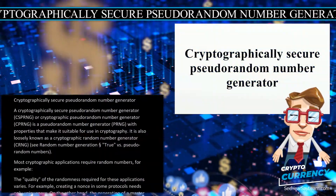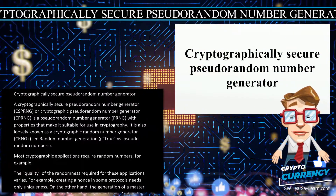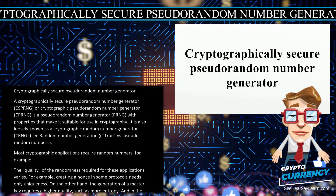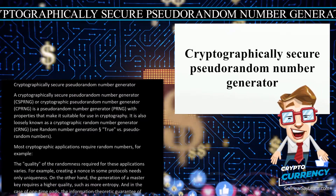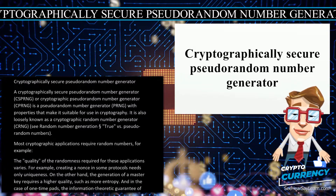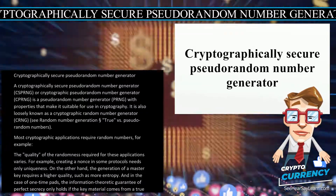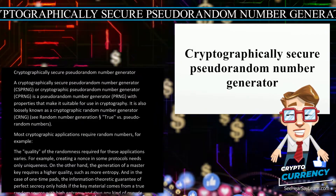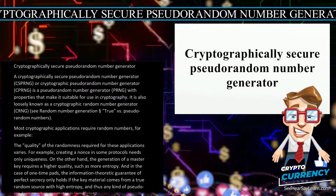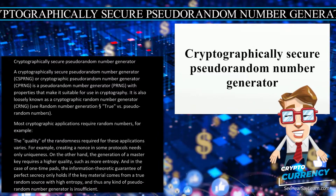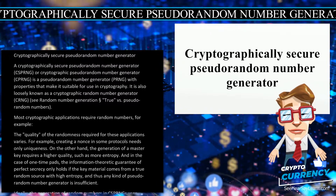A cryptographically secure pseudo-random number generator (CSPRNG), or cryptographic pseudo-random number generator (CPRNG), is a pseudo-random number generator (PRNG) with properties that make it suitable for use in cryptography. It is also loosely known as a cryptographic random number generator (CRNG).